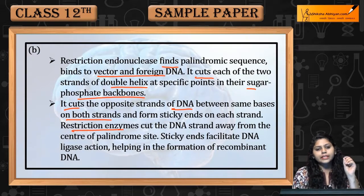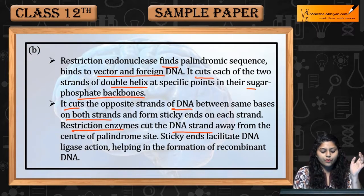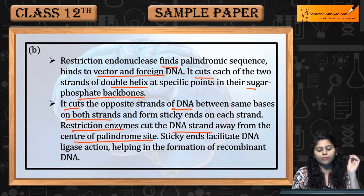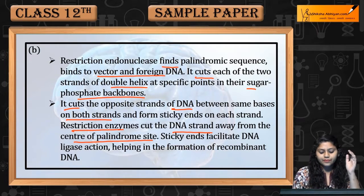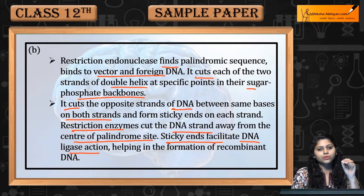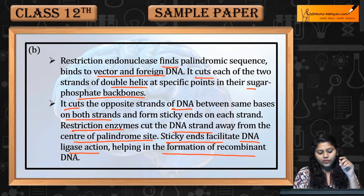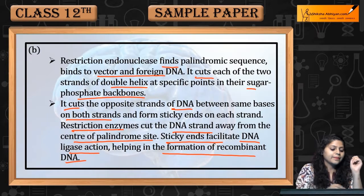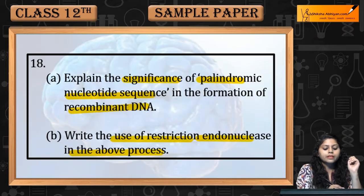Restriction enzymes cut DNA strands away from the center of the palindromic site, generating sticky ends. These sticky ends facilitate DNA ligase action, which helps in the formation of recombinant DNA. This concludes question number 18.